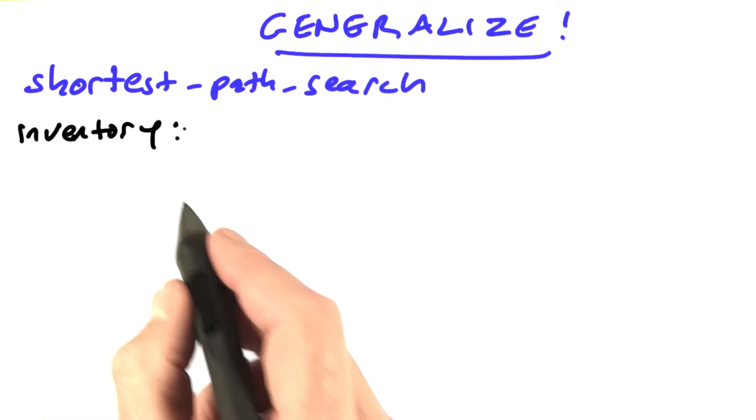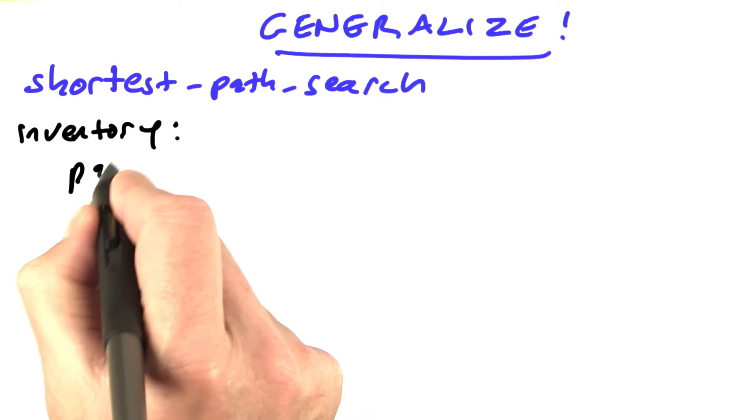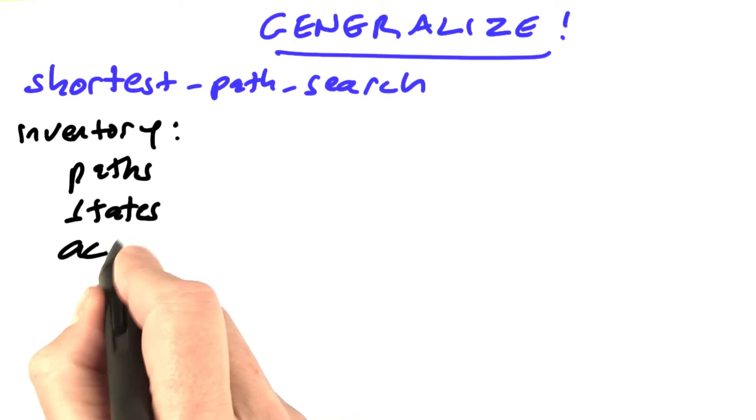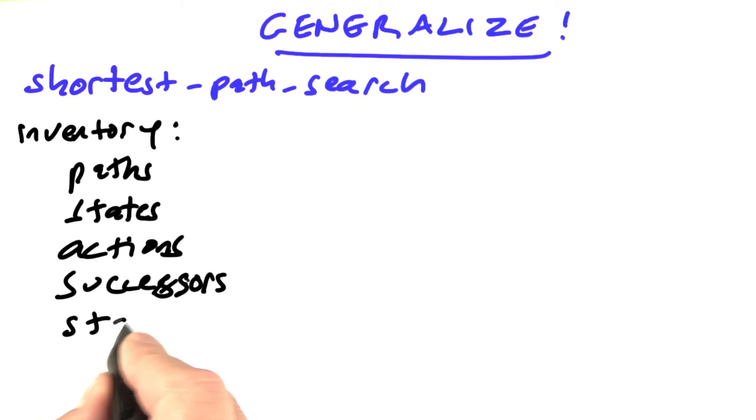Let's take our inventory, the concepts we have to deal with. We've got paths, states, actions, successors. We have a start state. We have a goal.